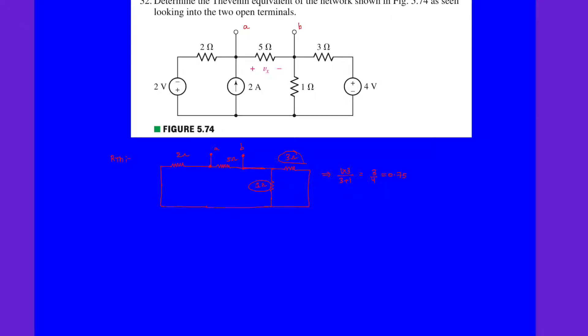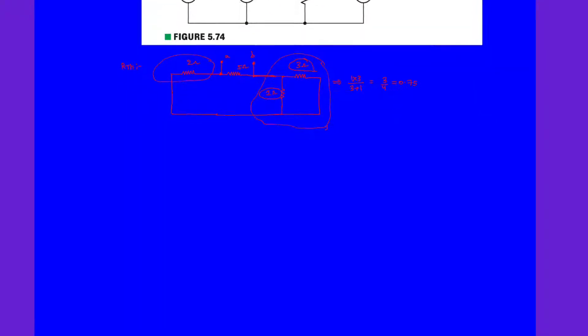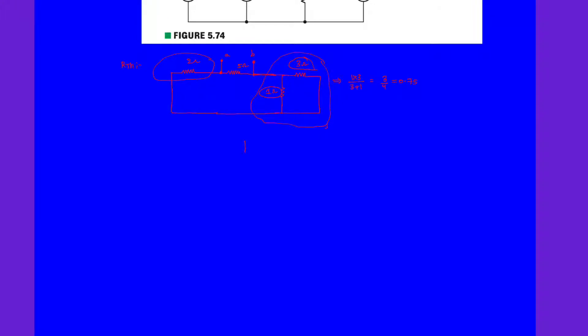And this combination, this parallel combination of 3 and 1 ohm, is in series with this 2 ohm resistance. Clearly now the simplified circuit diagram looks like this: 5 ohm and 2 plus 0.75 ohms, that is nothing but 2.75 ohms.